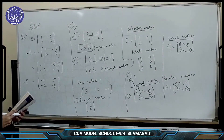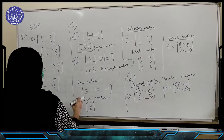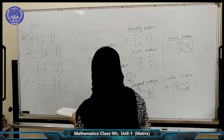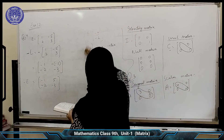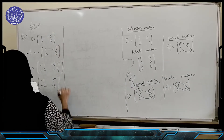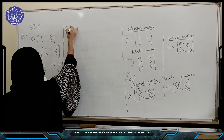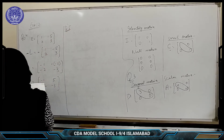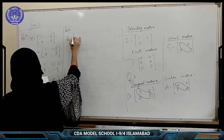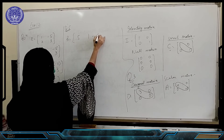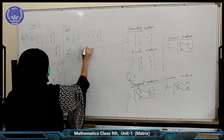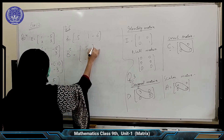Question number 5 is: find the transpose of the given matrices. In transpose, the number of rows converts to number of columns and the columns convert to rows. This is called the transpose.